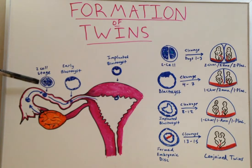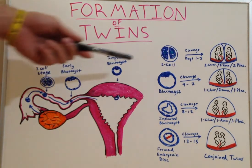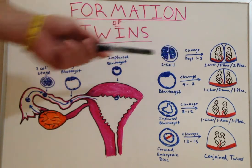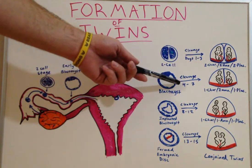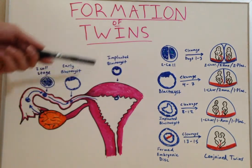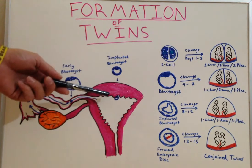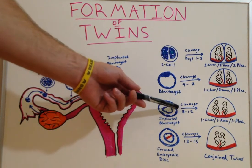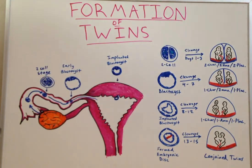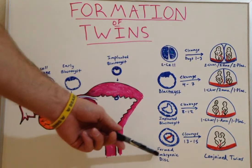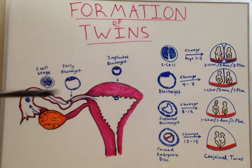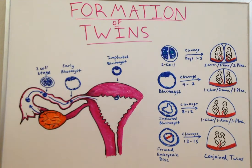Splitting can occur in the two-cell stage, typically between days one and three; the early blastocyst stage between days four and seven; the implanted blastocyst stage between days eight and twelve; and already in a blastocyst with a formed embryologic disc between days thirteen to fifteen and on. The earlier that the splitting occurs, the more independent the twins will become.